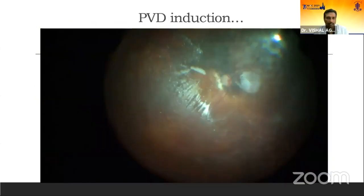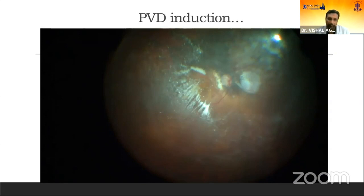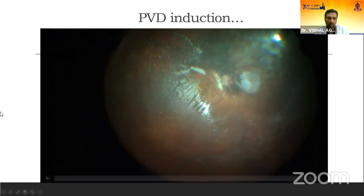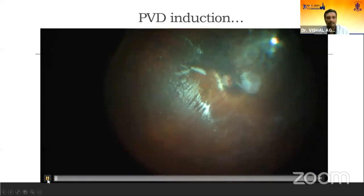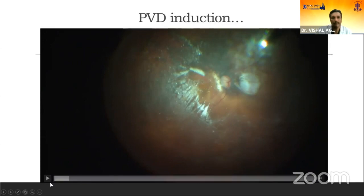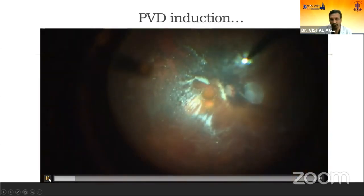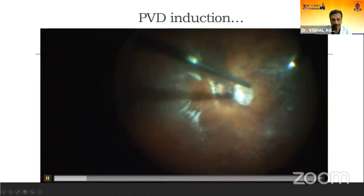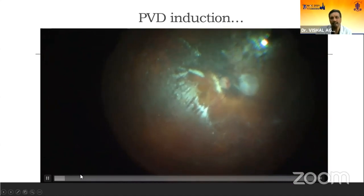The last point is PVD induction. PVD induction in these cases is very difficult. Even when you believe PVD has been fully induced by pulling and injecting triamcinolone and no vitreous is left on the surface, there will still be some cortical vitreous remaining that needs to be peeled. If not peeled, this results 100% in a recurrence or a failed surgery.